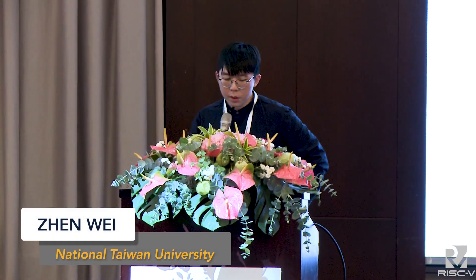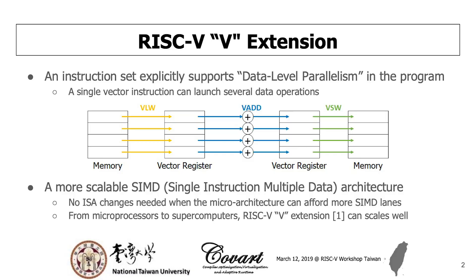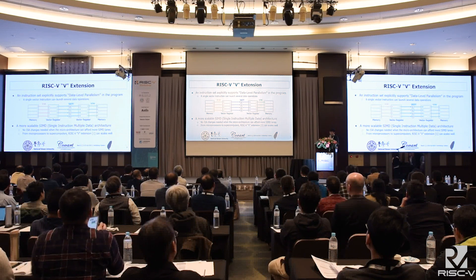First, I want to introduce the RISC-V vector extension. The RISC-V vector extension is an instruction set which exploits the data level of parallelism in a program. If you issue a single vector instruction, it can launch several data operations at a time. The RISC-V vector extension is a more scalable single instruction multiple data architecture. If you want to change your number of execution lanes or vector register size in your microarchitecture, you don't need to change your ISA. So the RISC-V vector extension can scale well from the microprocessor to the supercomputer.